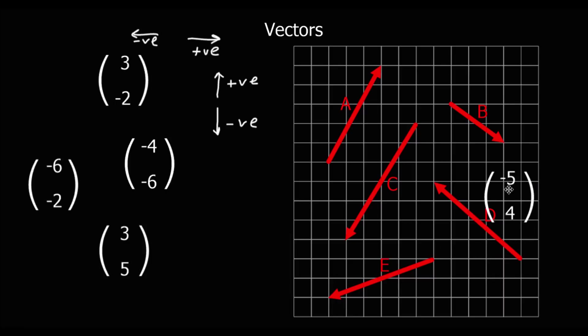I think that's D. One, two, three, four, five to the left — one, two, three, four up. So D is minus five, four.